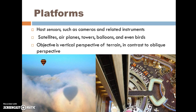We're going to be talking about various platforms. The platform will host a sensor such as a camera or other instruments. These may be satellites in space, airplanes, or balloons — you can see the picture of the balloon here, and towers on the right-hand side. The main objective is a vertical perspective of the terrain, in contrast to an oblique perspective, such as what you might see out the window of an aircraft, which doesn't lend itself well to measurement.